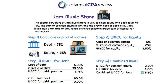Moving into step four, remember the point of weighted average cost of capital is to give us the blended cost of capital across debt and equity. So we add them together: the WAC for common equity was 2.5% from step two, and the WAC for debt from step three was 3%. Added together, the combined WACC for Jazz Music Store is 5.5%.